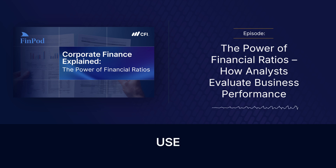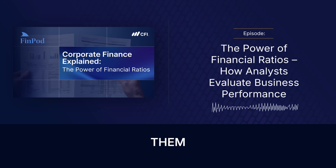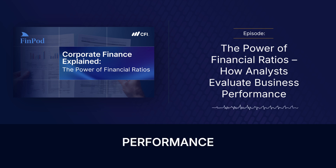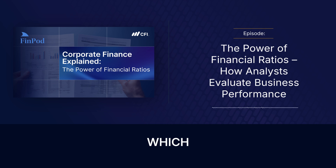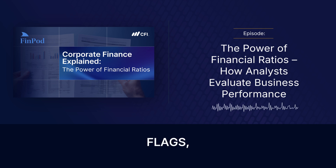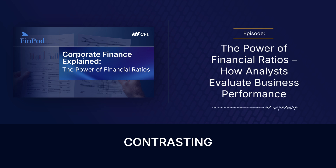They're the tools analysts use to take these massive, complicated financial statements and boil them down into simple, actionable indicators — performance, efficiency, and even existential risk. The sources we use for this deep dive really cut through that complexity. So our mission today is to show exactly how analysts use these ratios — spotting red flags, measuring real business quality — using specific contrasting examples, companies you know, to make it stick.